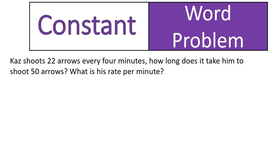Now we come to the word problem. Yay, word problem time. Here's our word problem. Kaz shoots 22 arrows every four minutes. How long does it take him to shoot 50 arrows? And what is his rate per minute? Interesting. Two different questions. How long does it take him to shoot 50 arrows? And what is his rate per minute?